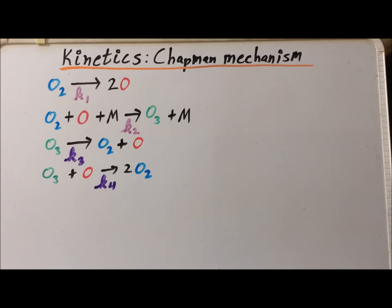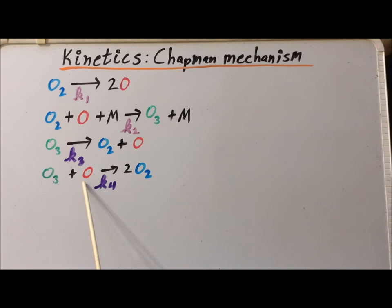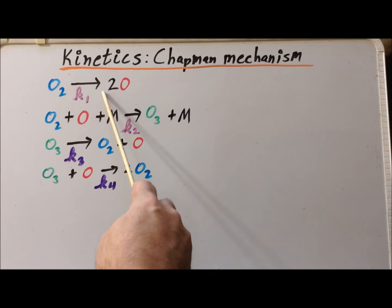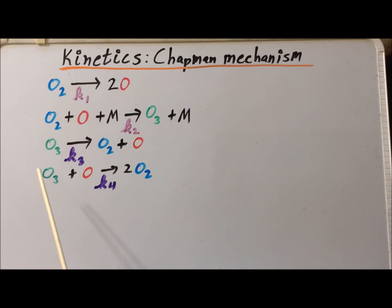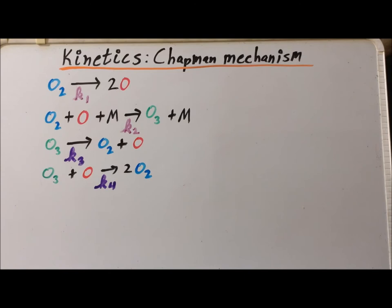In the third step, ozone decomposes into dioxygen and an oxygen atom, and this occurs with the rate constant K3. The fourth step is a collision between ozone, O3, and an oxygen atom, yielding two molecules of dioxygen, and this occurs with the rate constant K4. We notice for steps one and three, we have unimolecular reactions, either with dioxygen or ozone, and in either of these cases, this reaction takes place because of the absorption of ultraviolet radiation.